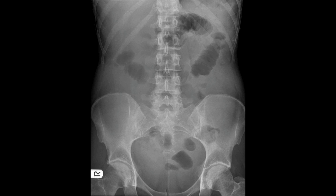Moving on to our first abdominal X-ray. Looking at the bowel gas pattern — the B in ABC — we can see a couple of gas-filled distended segments of bowel loops within the upper abdomen. These show continuous closely placed rings going across the bowel — the plicae circulares or valvulae conniventes — characterising small bowel. This looks like distended gas-filled small bowel loops.